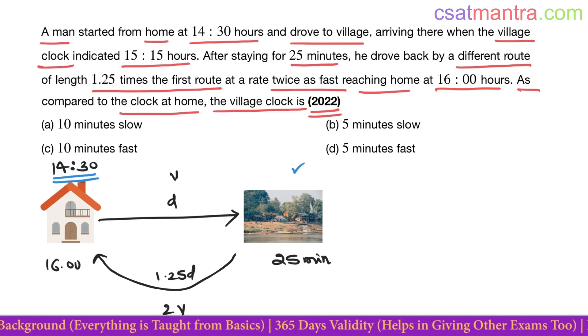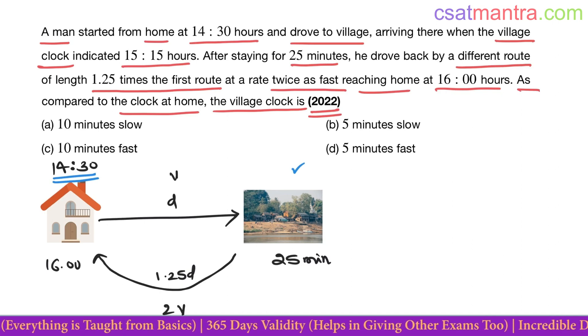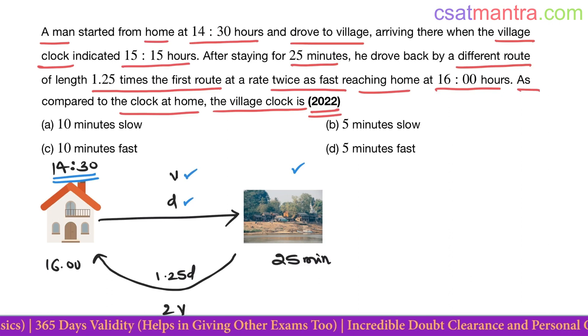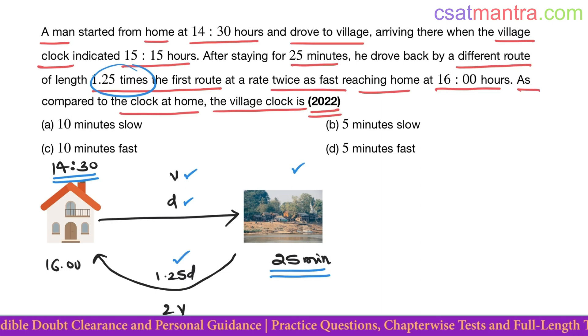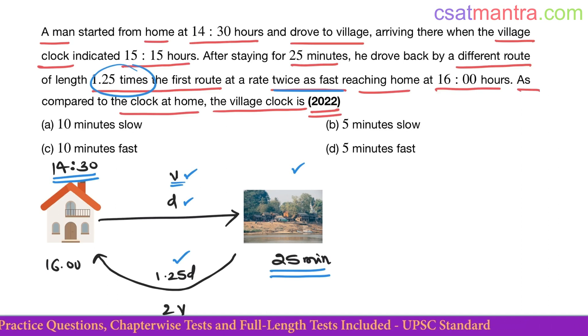Let's take the distance between home and village as D and he travelled at V speed. After reaching village, he stayed there for 25 minutes. Then he took a different route of length 1.25 times. Now the distance is 1.25D, twice as fast. Initially he was travelling at V speed, now twice to V and he reached home at 16:00 hours. What is the total time taken?